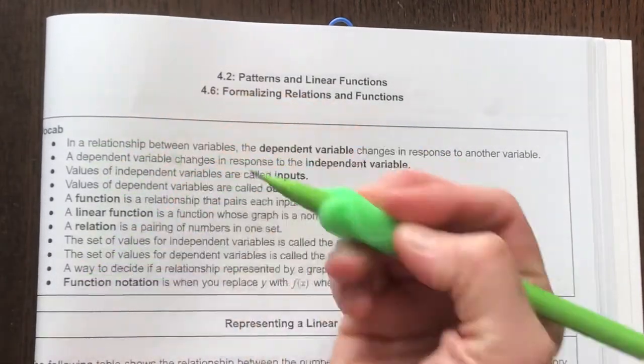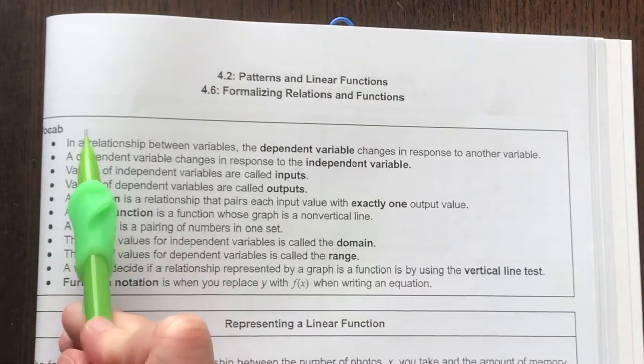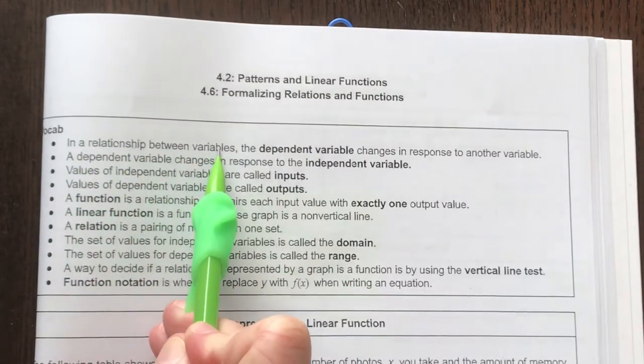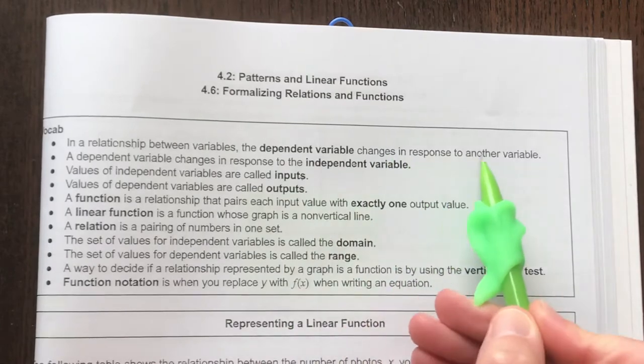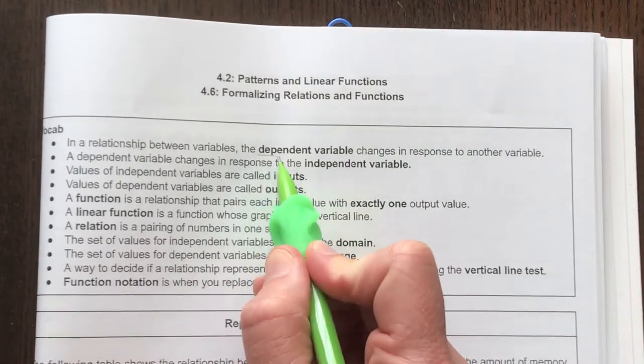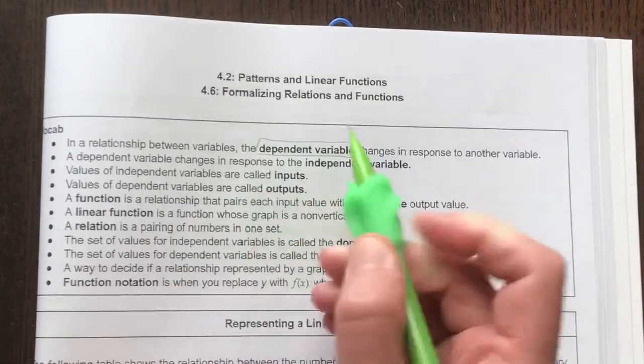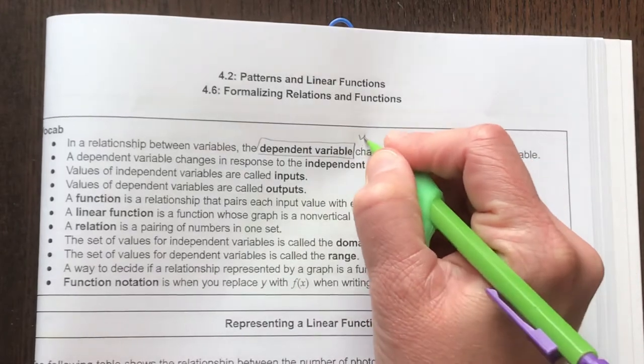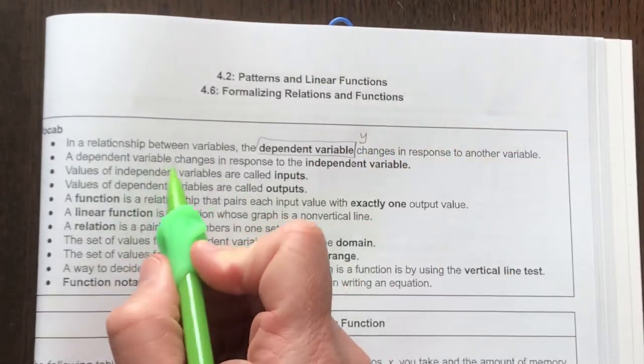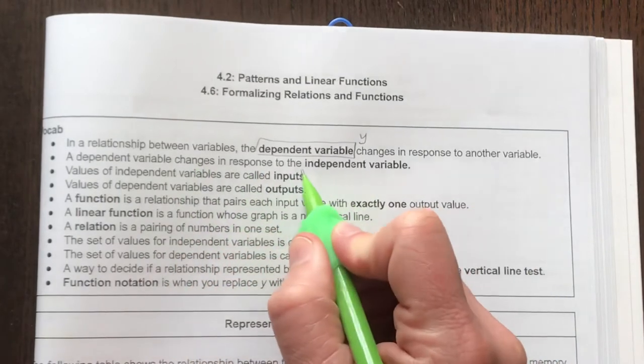So here are the list of vocab words, and I'll just briefly go through these. In a relationship between variables, the dependent variable changes in response to the other,